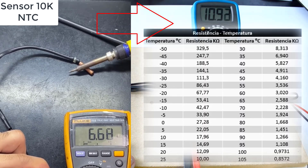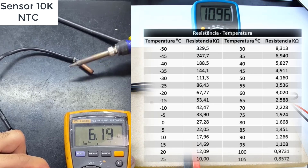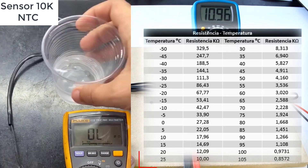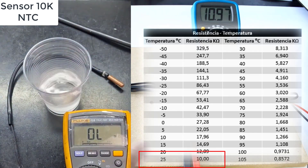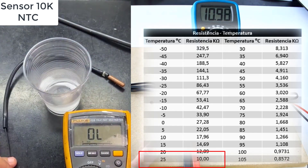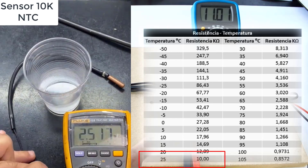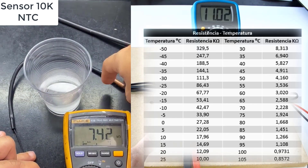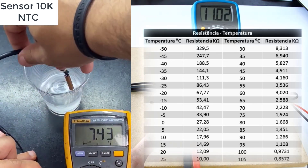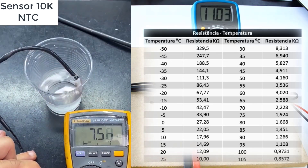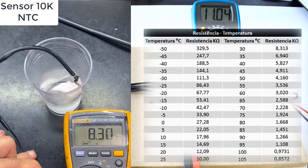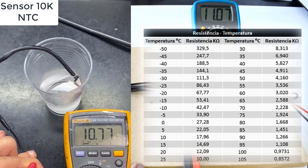Why is this happening? Because the temperature is not exactly at 25 degrees, it is approximate. Therefore the value is not exact. If the temperature were at 25 degrees, it would give 10K. Since the temperature is approximate, the value is proportional to the ambient temperature at the time of the reading.